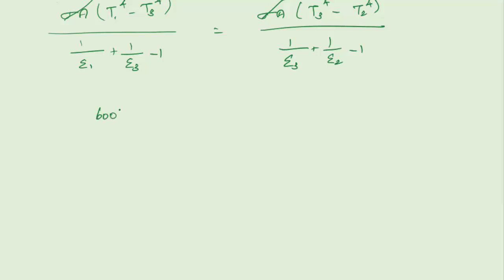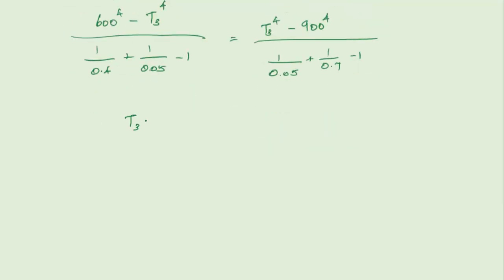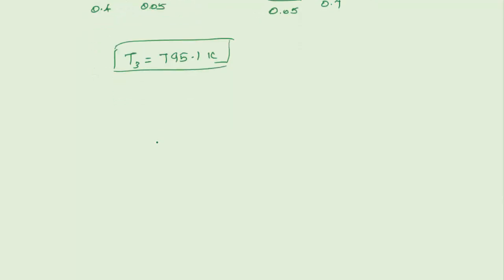Substituting values: (600^4 − T3^4) / (1/0.4 + 1/0.05 − 1) = (T3^4 − 900^4) / (1/0.05 + 1/0.7 − 1). Solving this equation gives the shield temperature T3 = 795.1 Kelvin.